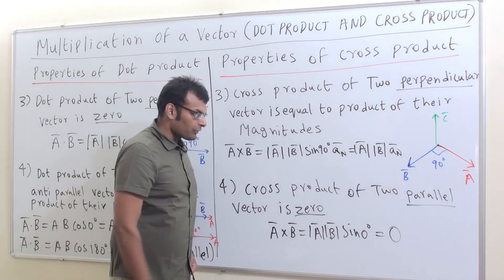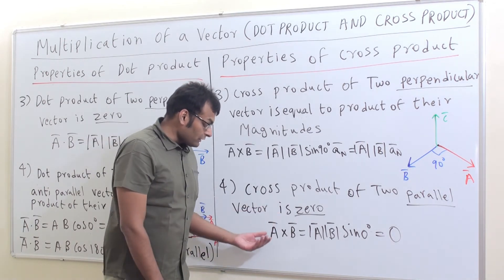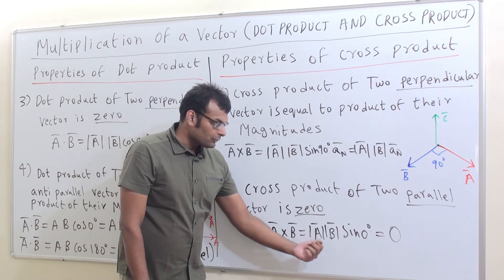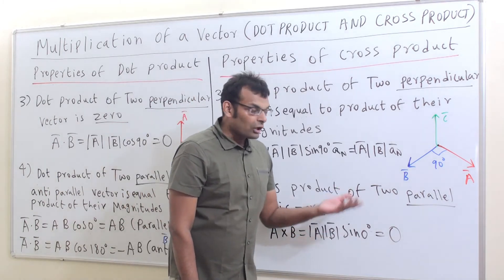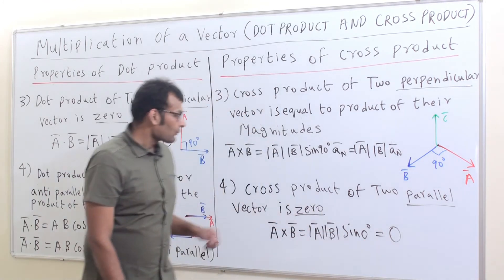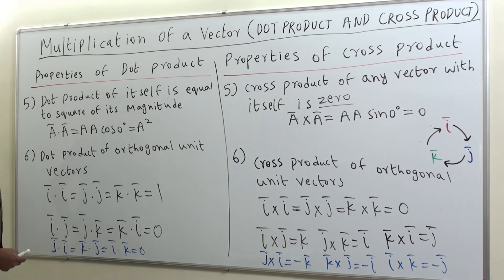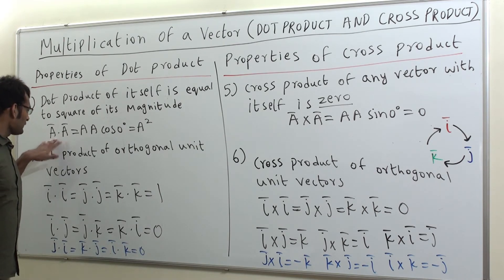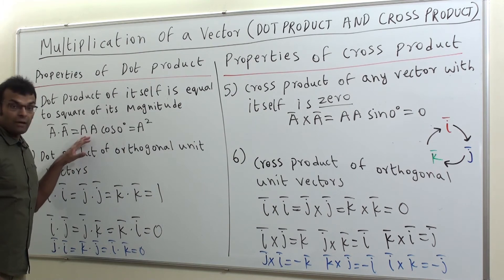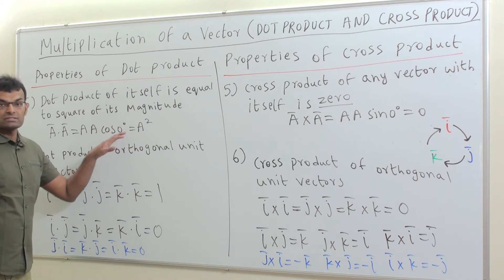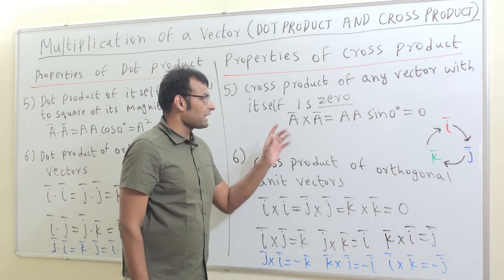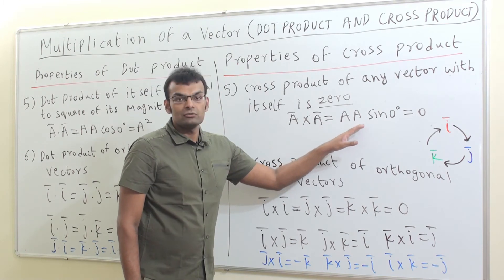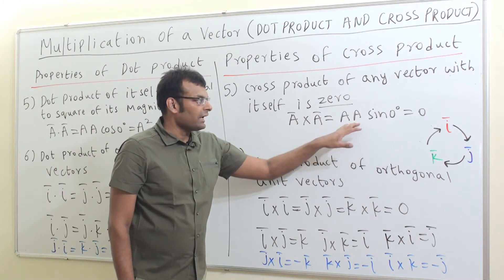The fourth property: cross product of two parallel vectors is 0. A bar cross B bar equals magnitude of A bar into magnitude of B bar into sine of the angle between them. Since the angle is 0, sin 0 is 0, and the final result is 0. The fifth property: dot product of a vector with itself equals the square of its magnitude. A bar dot A bar equals A into A into cos 0, which gives A squared. Cross product of any vector with itself is 0, since A bar cross A bar equals A into A into sin 0 equals 0.